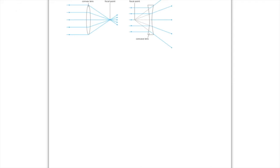Whereas with a concave lens — we call this a diverging lens — what happens is these rays come to the lens, but rather than coming together, they spread out. And so therefore the focal point, that's where the parallel rays meet, is going to be in front of the lens as opposed to behind.